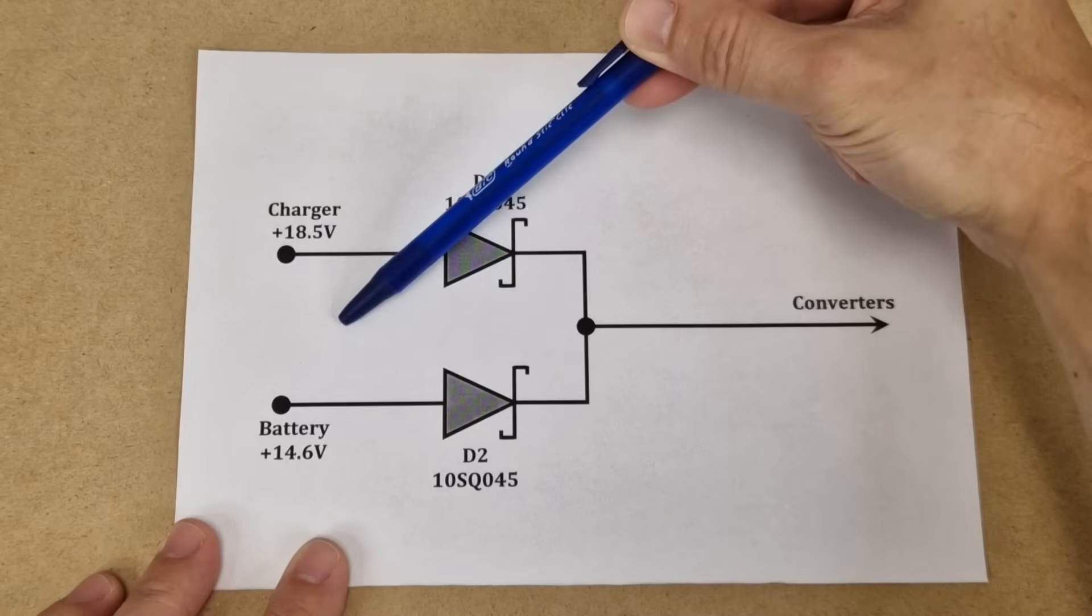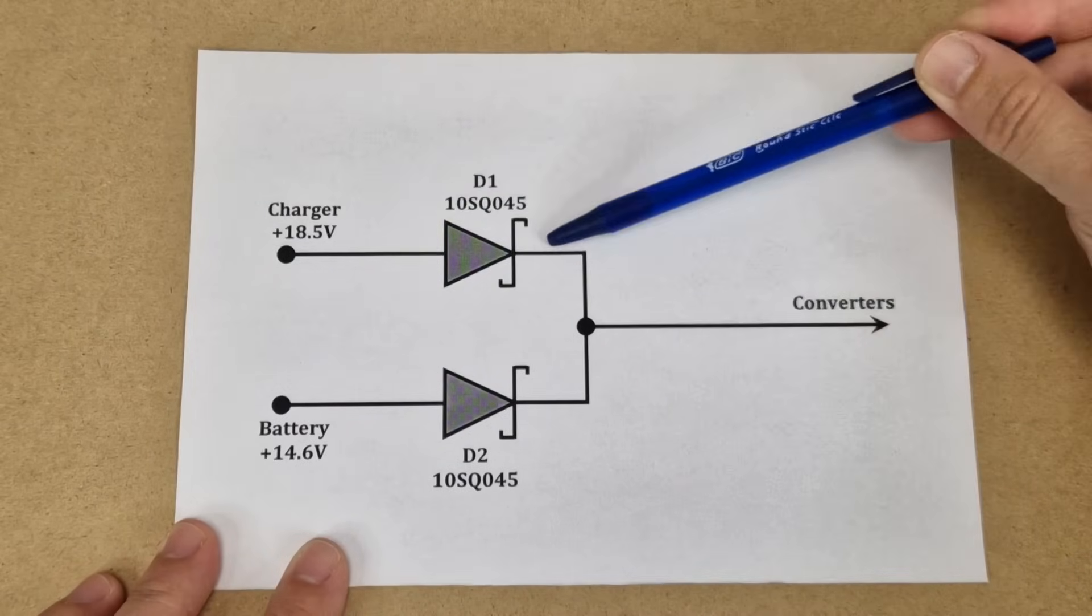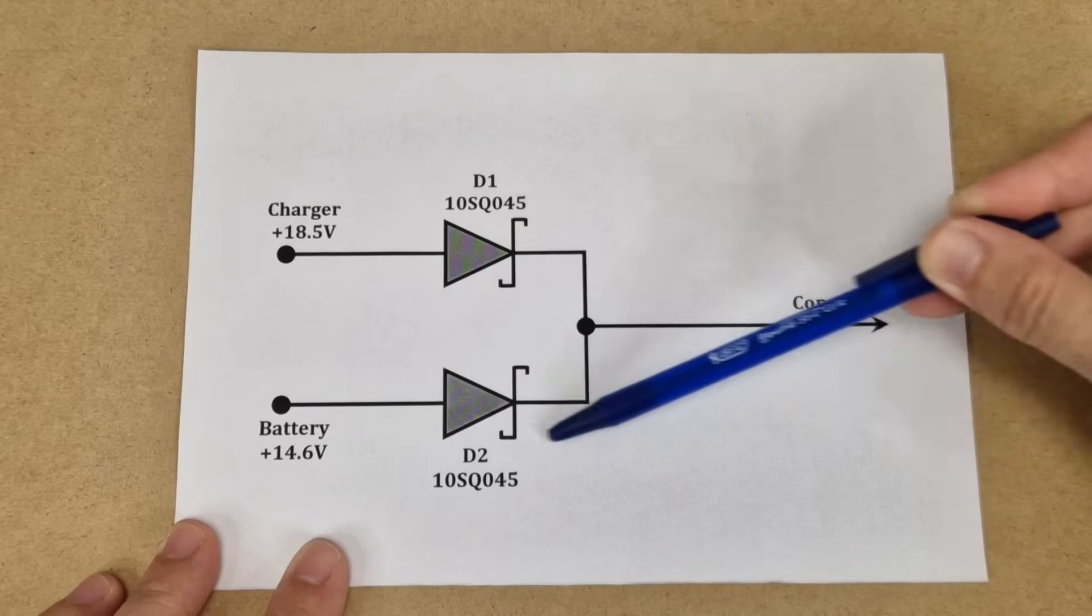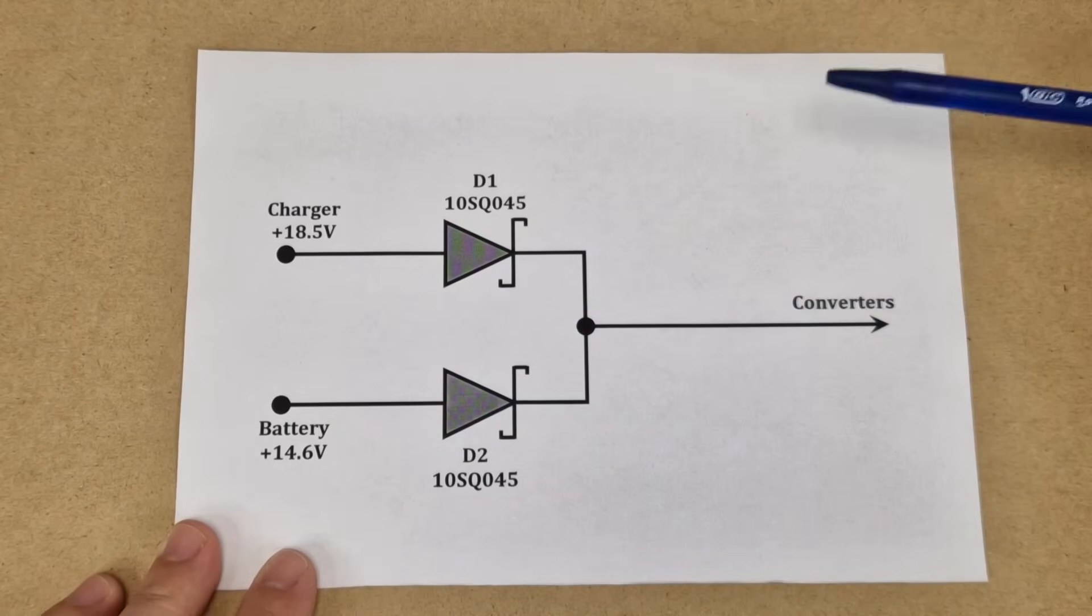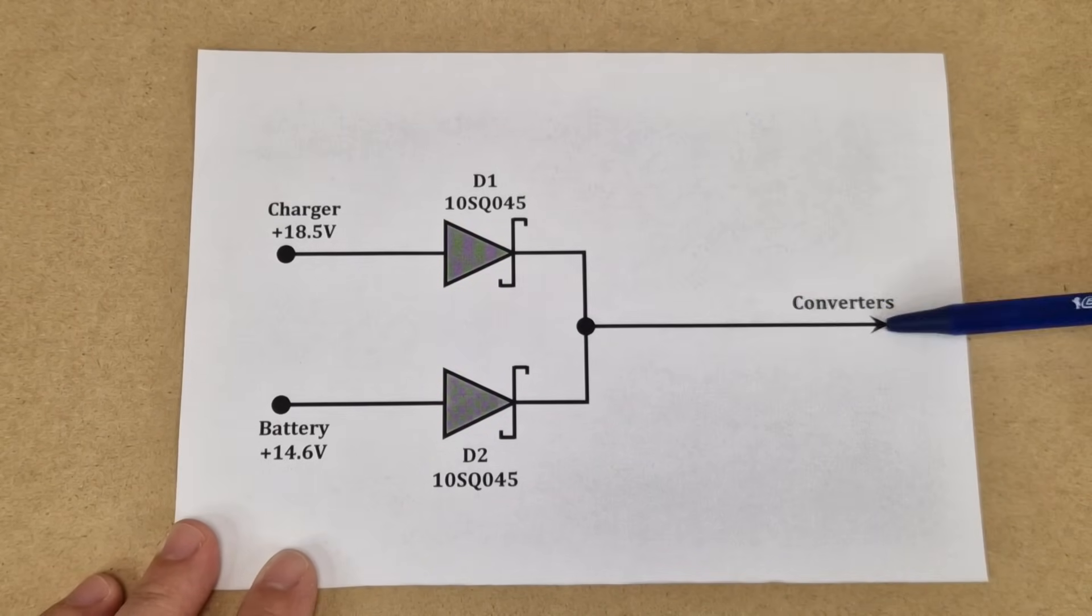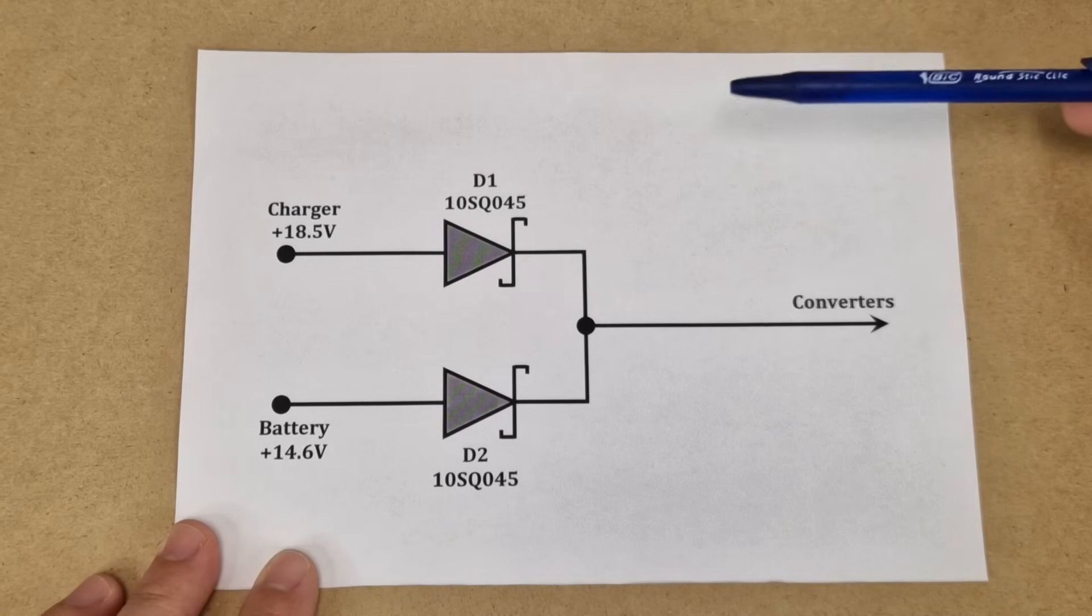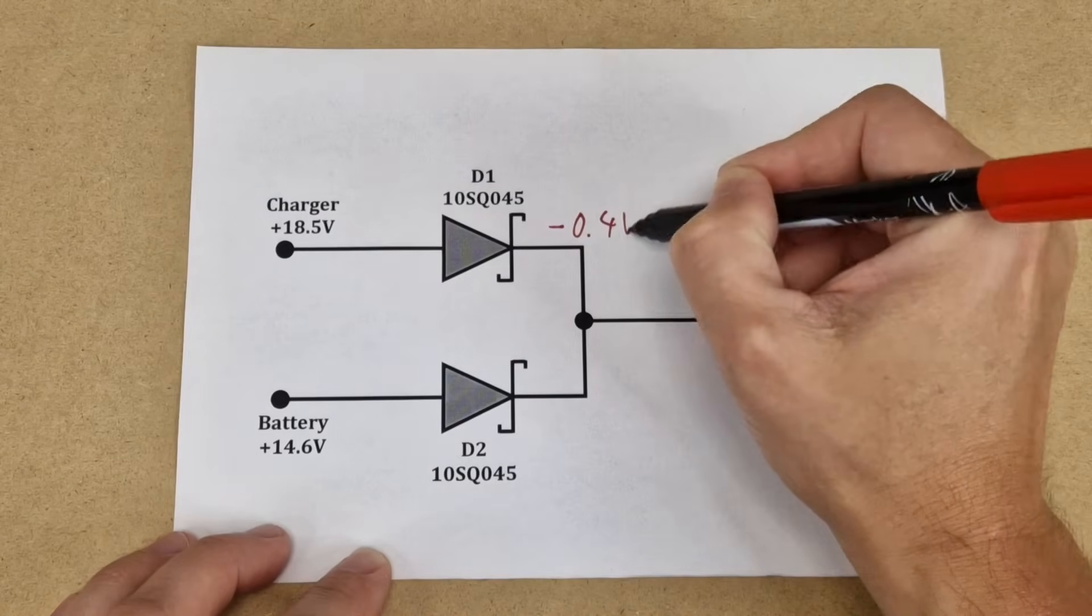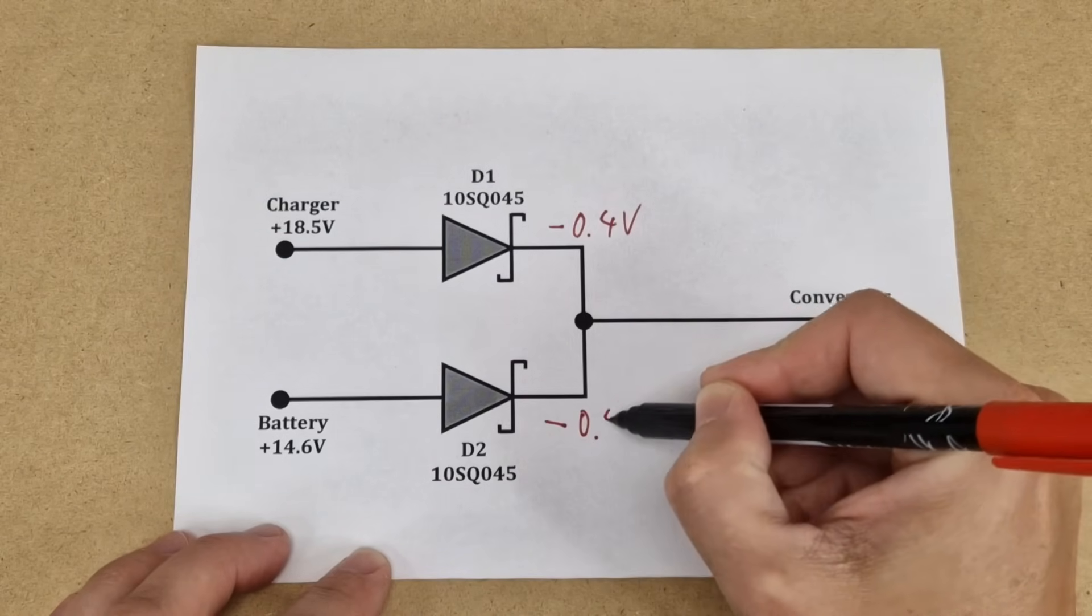And if the mains power goes off, the voltage at the output of the diodes drops from 18.5 volts to 14.6 volts. There is no switching time from the mains to battery backup, so the converters and final loads are continuously powered. There is a small forward voltage drop from the Schottky diodes, but we will ignore it for now.